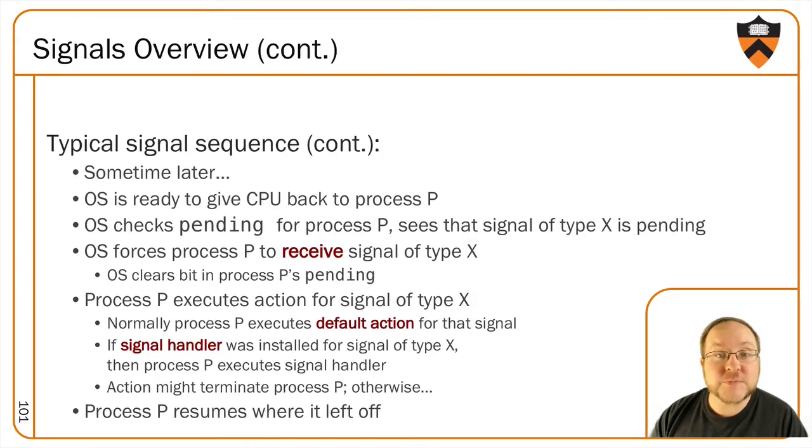Sometime later, the process resumes. It gets control of the CPU again. And oftentimes, actually, this is immediately. Signals are often notifications that should be handled immediately. So the OS would have good reason to context switch back into P at this point, so it can receive the signal. But whenever it is, the OS notes that the status bit for process P, it notifies P that the bit was set, and then it clears the bit and triggers P's signal handler, whichever that is, whether it's the default one or the custom one. If there is a custom signal handler for this exception in P, then P will execute that signal handler, which might do all sorts of things, including terminating the process. Otherwise, each signal does have a default behavior set by the OS.